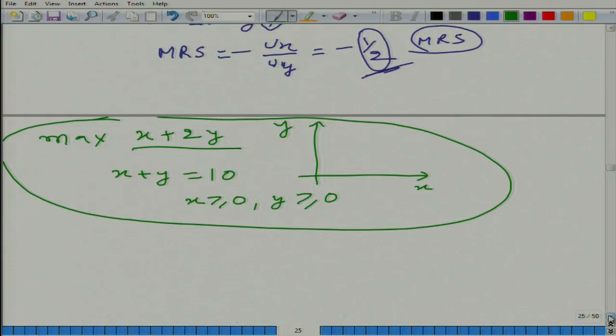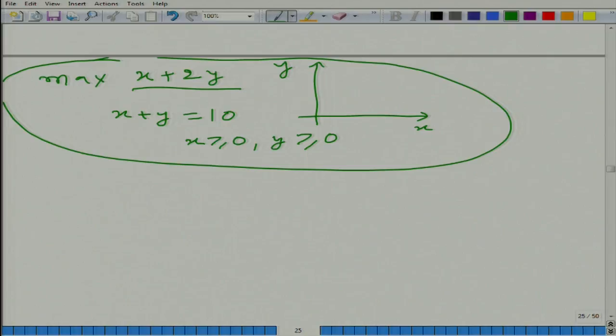We are going to solve this problem using two, three techniques. Let us say what does it mean that a person lives in a two good world. Good one can be, for example, tea and good two is cola. Amount of tea is given as x and amount of cola is given as y, and this person cares about his consumption in this particular fashion that twice of cola plus tea.